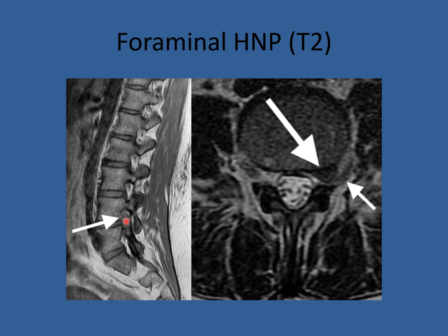Here is another foraminal disc herniation: normal above, normal below, and a space-occupying lesion in the foramen. The typical sign on the right shows the nerve root free and surrounded by fat. On the left, the nerve root is compressed by a disc herniation. We know this is a T2 image because water is white and fat is white.